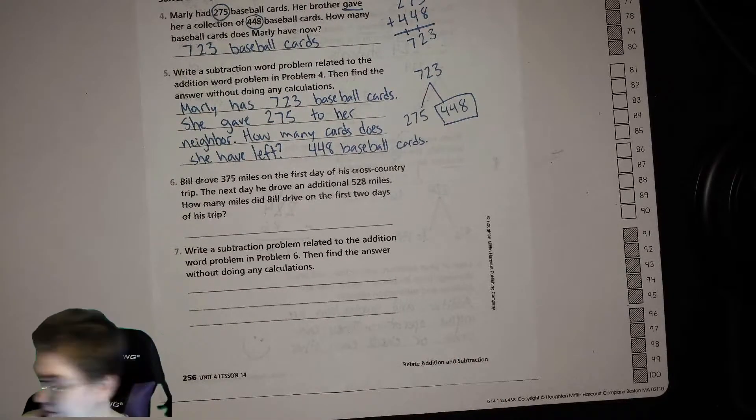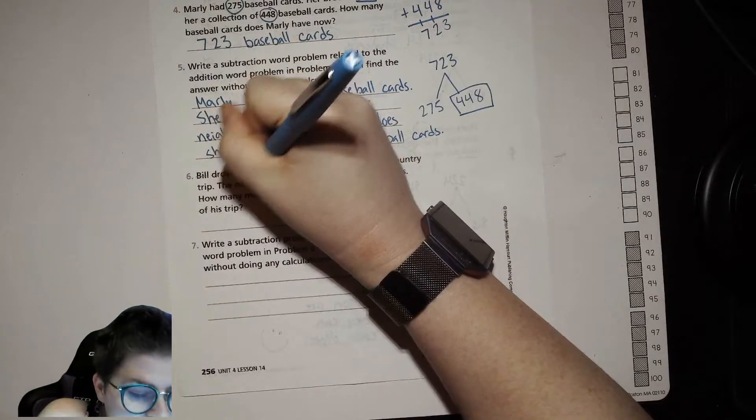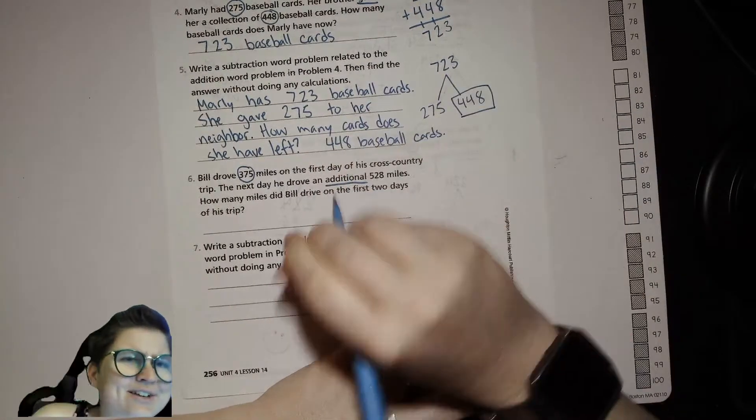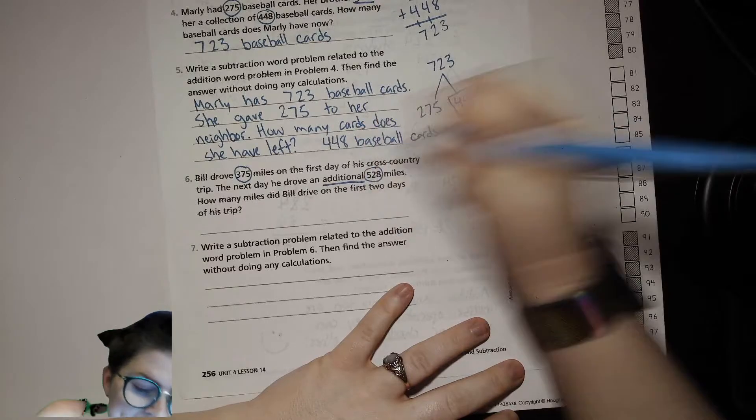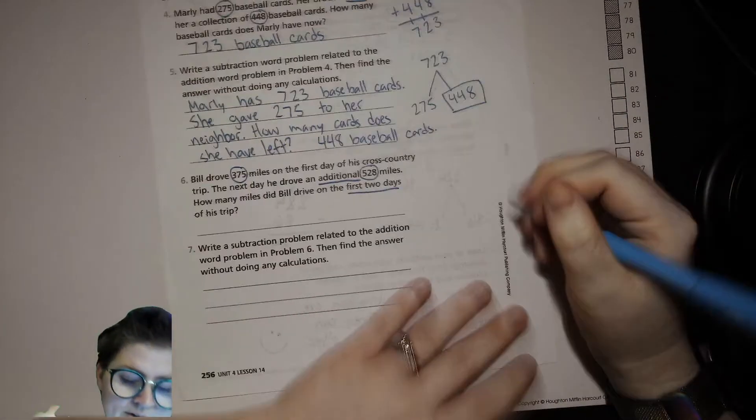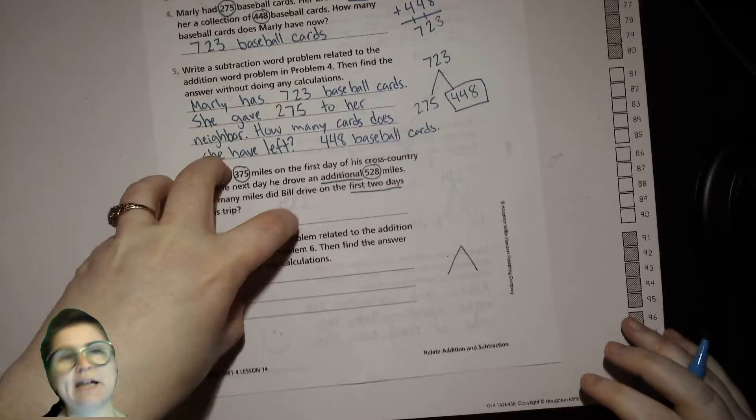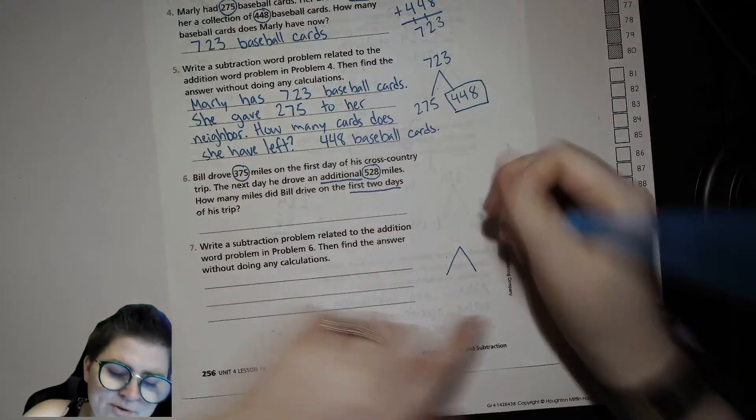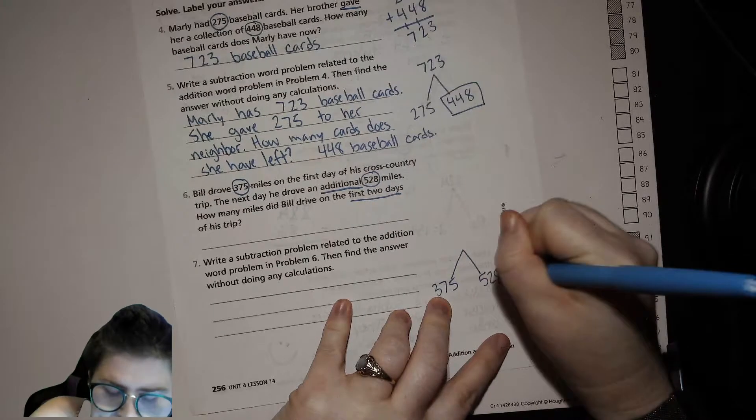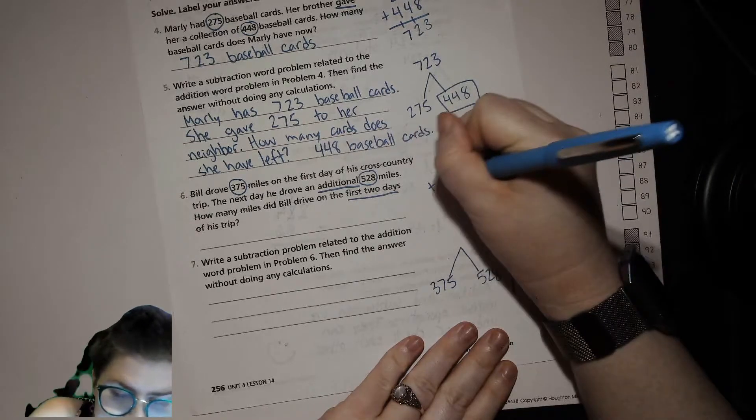All right, let's do this last one and then we're done. Bill drove 375 miles on the first day of his cross country trip. The next day he drove an additional—there's a hint that we're going to do addition—528 miles. How many miles did Bill drive on the first two days of his trip together? So I think the next question is making a subtraction problem, so let's make our math mountain. We're taking the first day and the second day, putting them together, so we're looking for the total. We're going to put our partners down here: 375 and 528. And then we'll do our addition up here to find our total. So 375 plus 528.